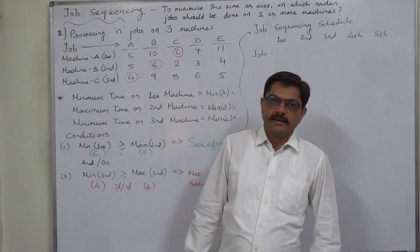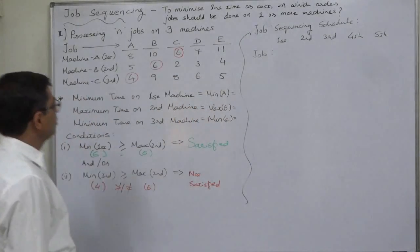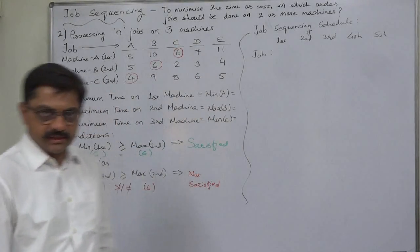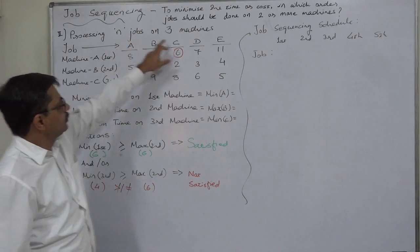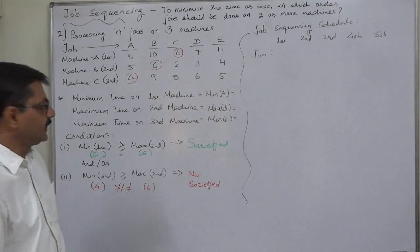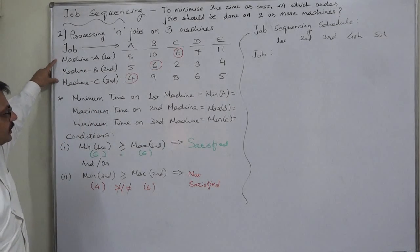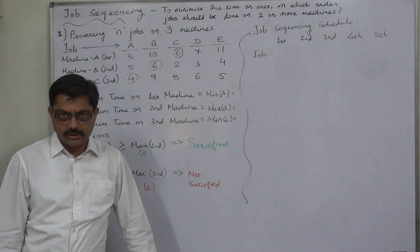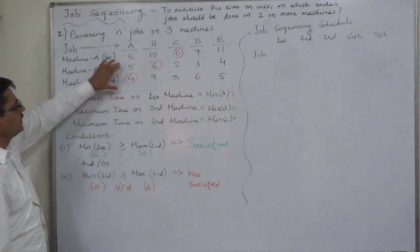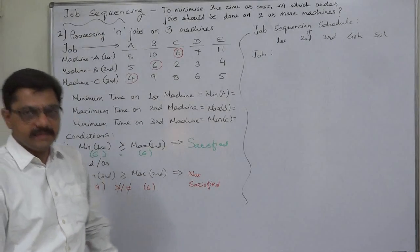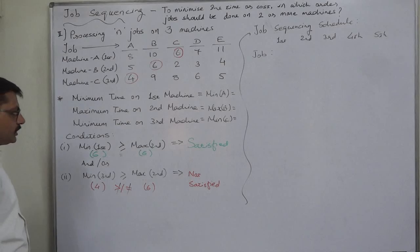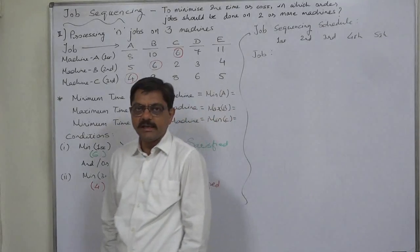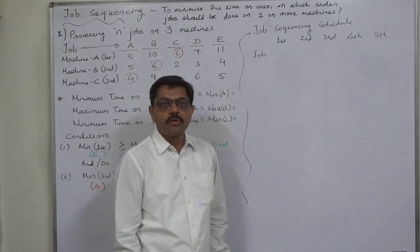Hello and welcome. In job sequencing, the new case is processing jobs on three machines. In the last lecture we were discussing problems involving processing jobs on two machines. Now in this case we are going to study the problem where there are three machines — Machine 1, 2, and 3 — labeled A, B, and C. There are five jobs to be processed on these three machines in order A, then B, then C. Johnson's algorithm for sequencing applies to two machines only.